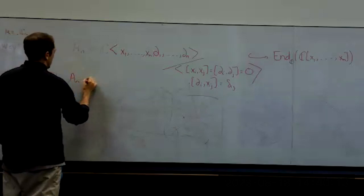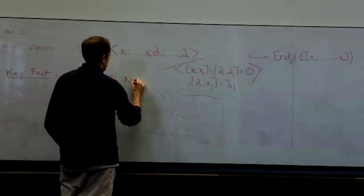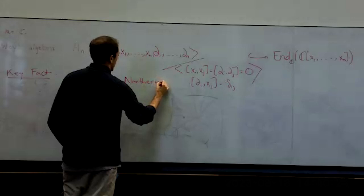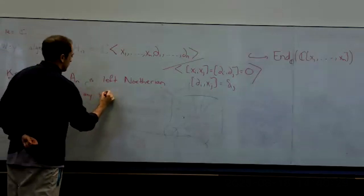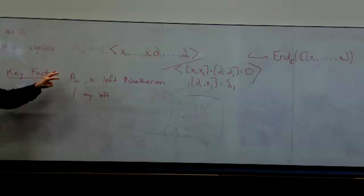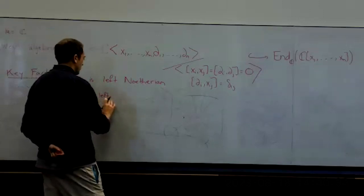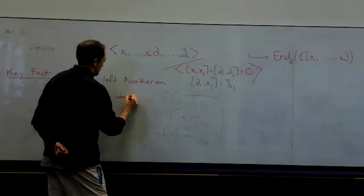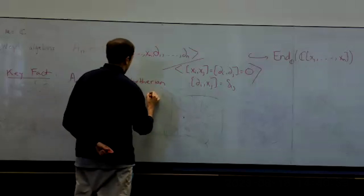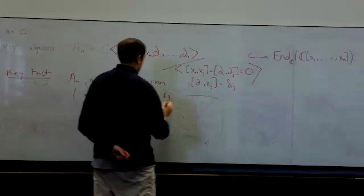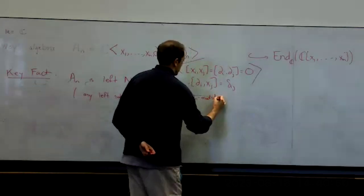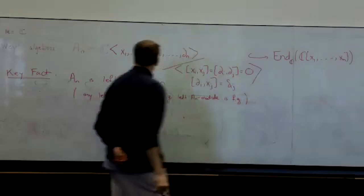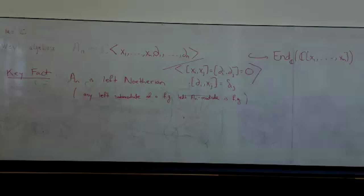The key fact about this algebra — what does that mean? It means that any finitely generated left A_n module has the property that all submodules are also finitely generated, i.e., the algebra is Noetherian. So if I have M which is a finitely generated left A_n module, being finitely generated means there's some surjection from A_n^q onto M.